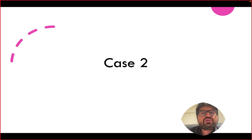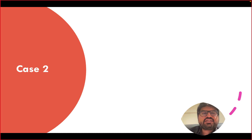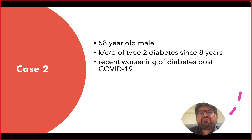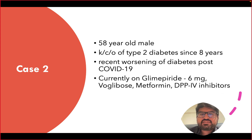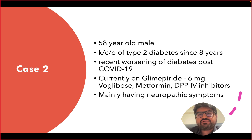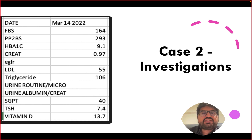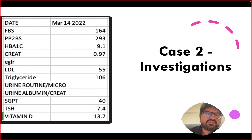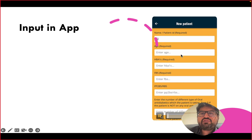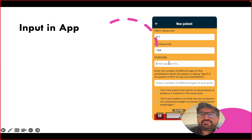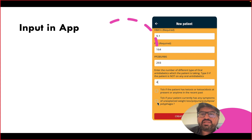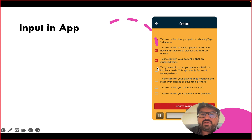The second case is a 58-year-old patient with type 2 diabetes for eight years who had recent worsening after COVID-19. He is on 6 mg glimepiride, voglibose, metformin, and a DPP-4 inhibitor — four oral antidiabetics. His main symptom is painful diabetic neuropathy. Fasting blood sugar is 164, post-meal is 293, HbA1c is 9.1%. Inputting this data in the app confirms the patient needs insulin.